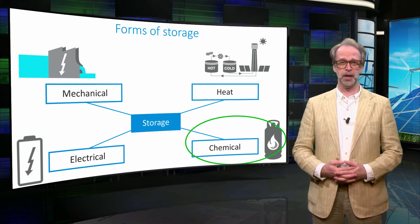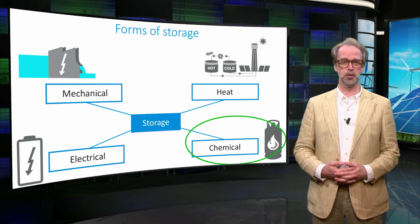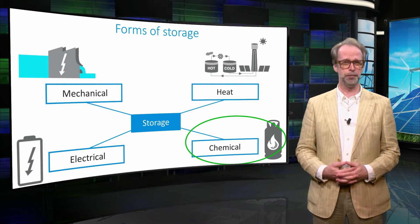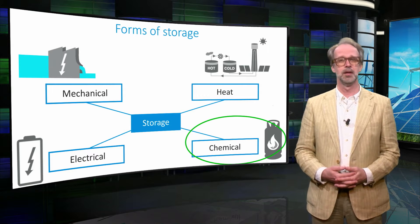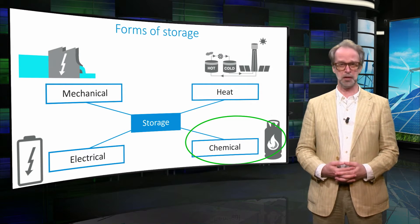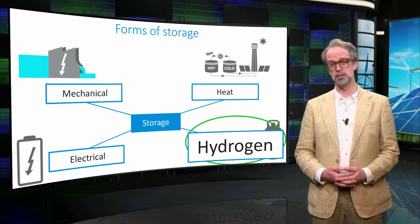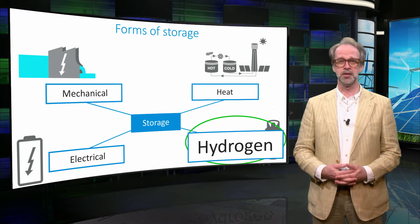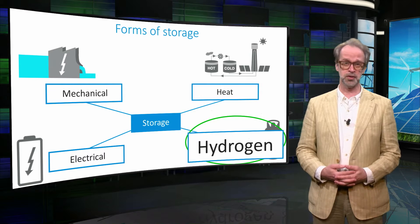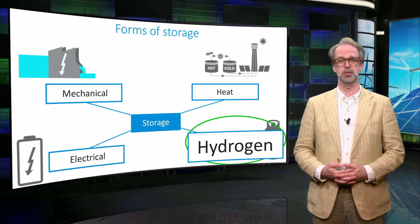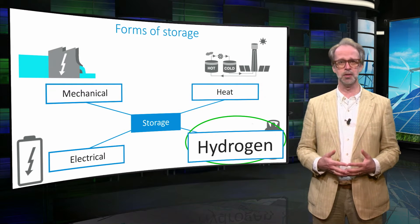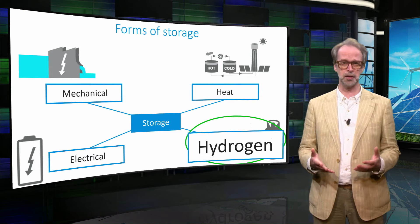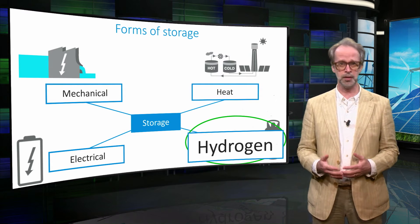In a fuel, the energy is stored in a chemical bond. The energy is retrieved by burning the fuel. The most simple chemical bond to make from electricity is hydrogen. Hydrogen can be burned, as is done for instance in rockets, but it can also be converted back to electricity. This reversibility makes hydrogen particularly convenient to be used as an energy carrier in a sustainable energy system.